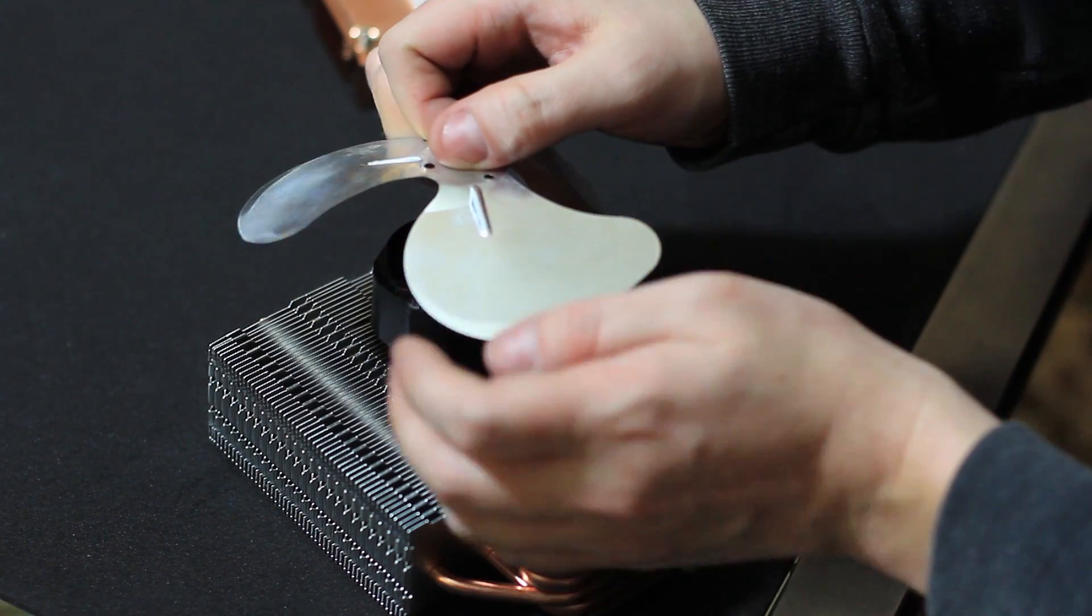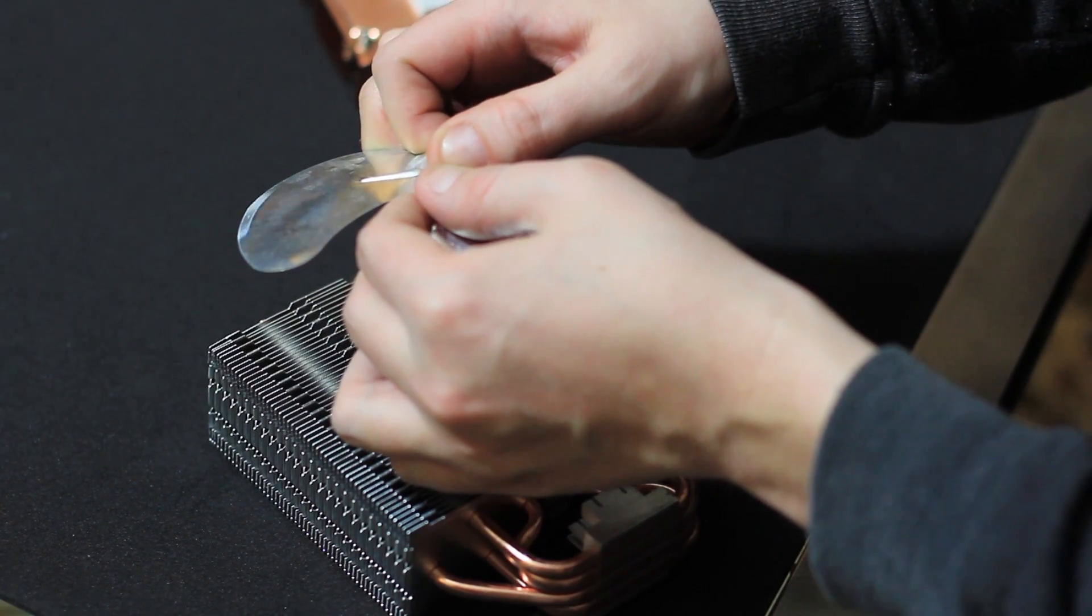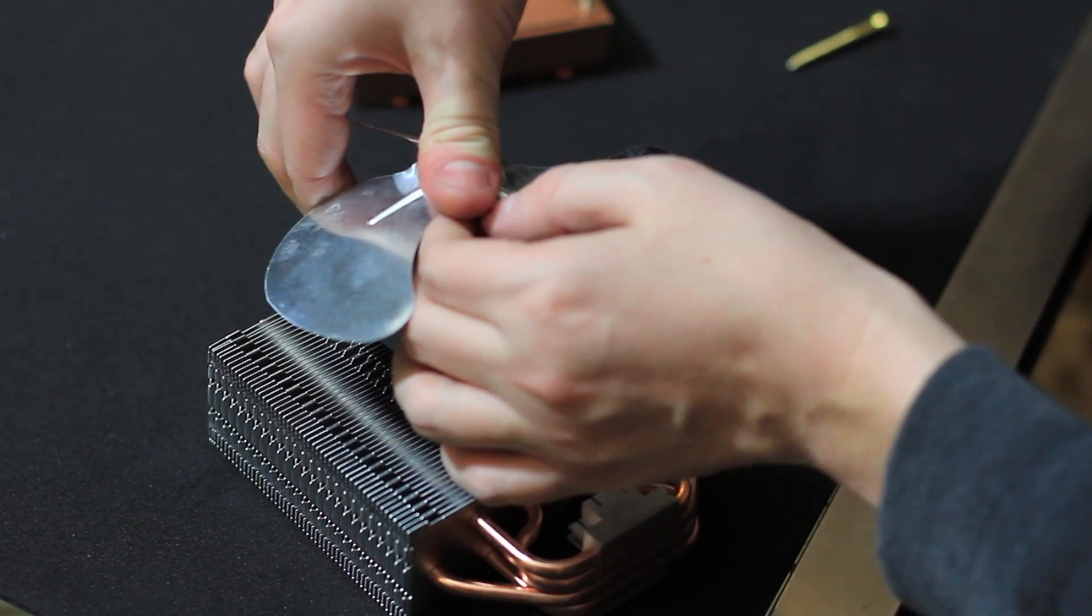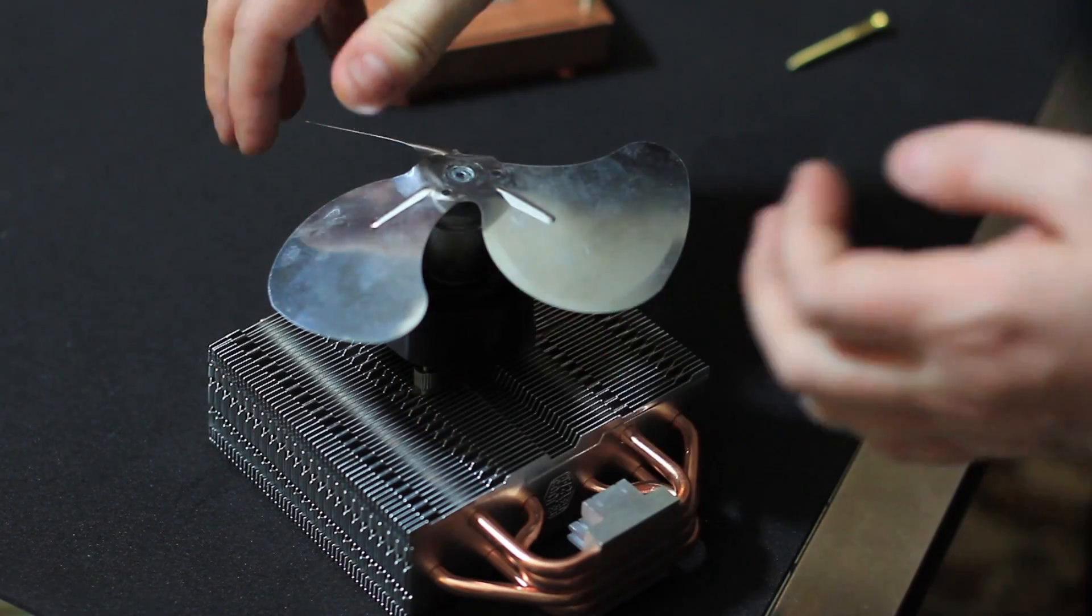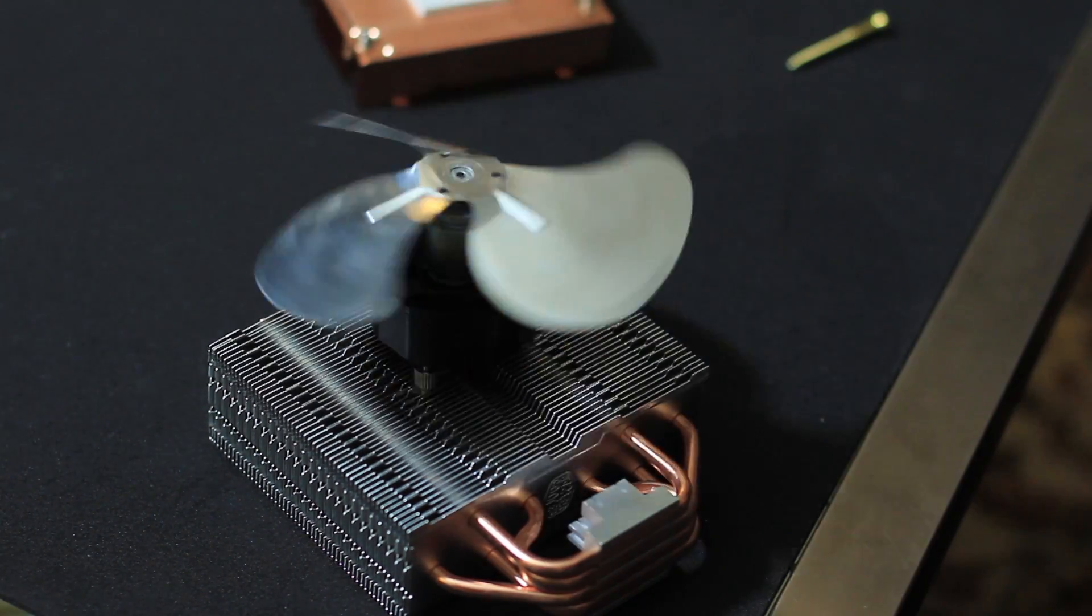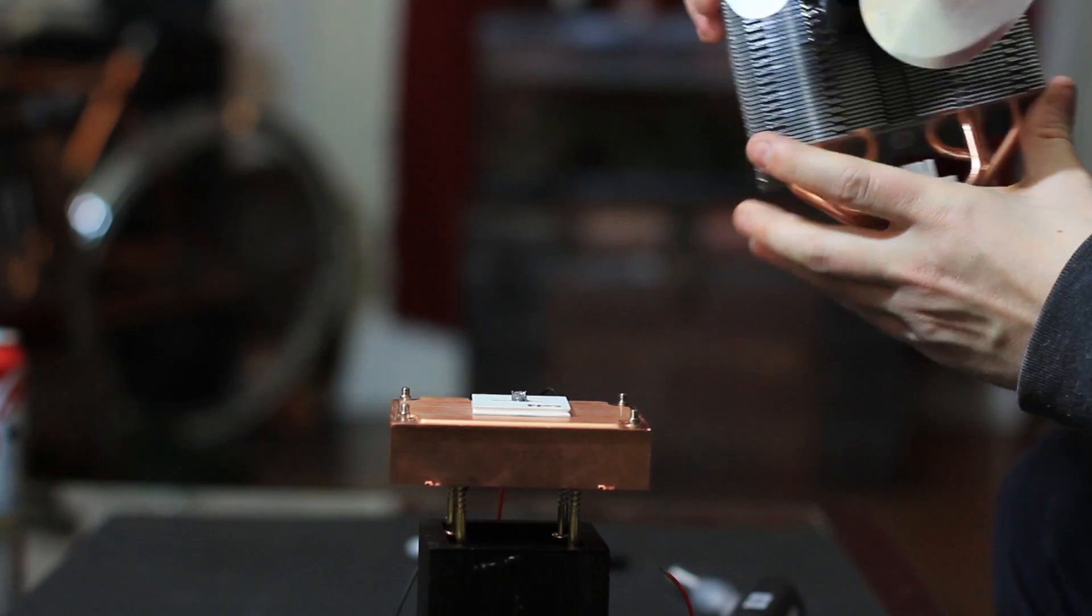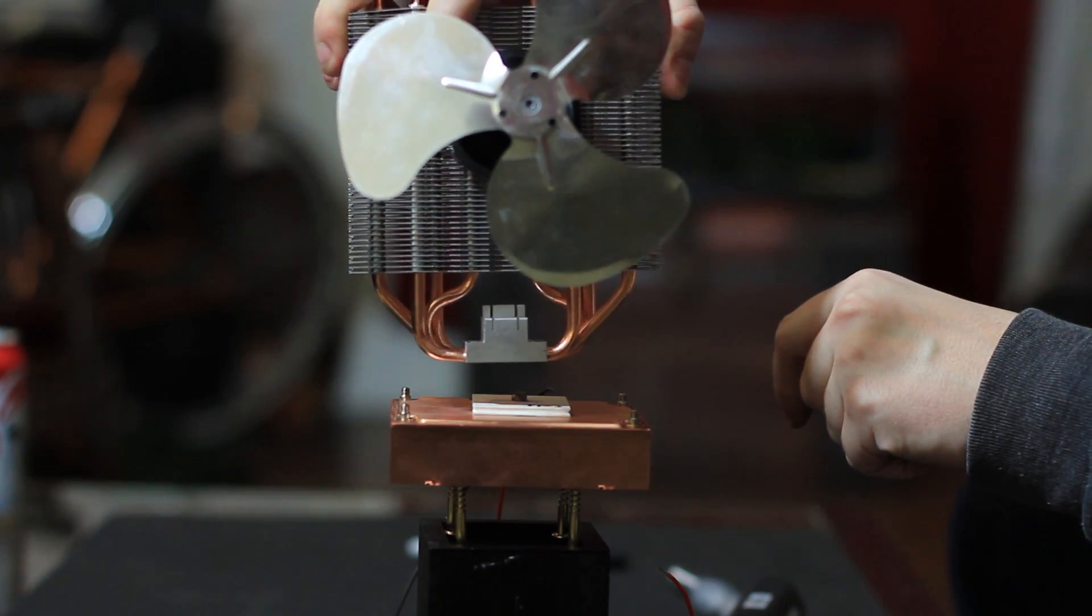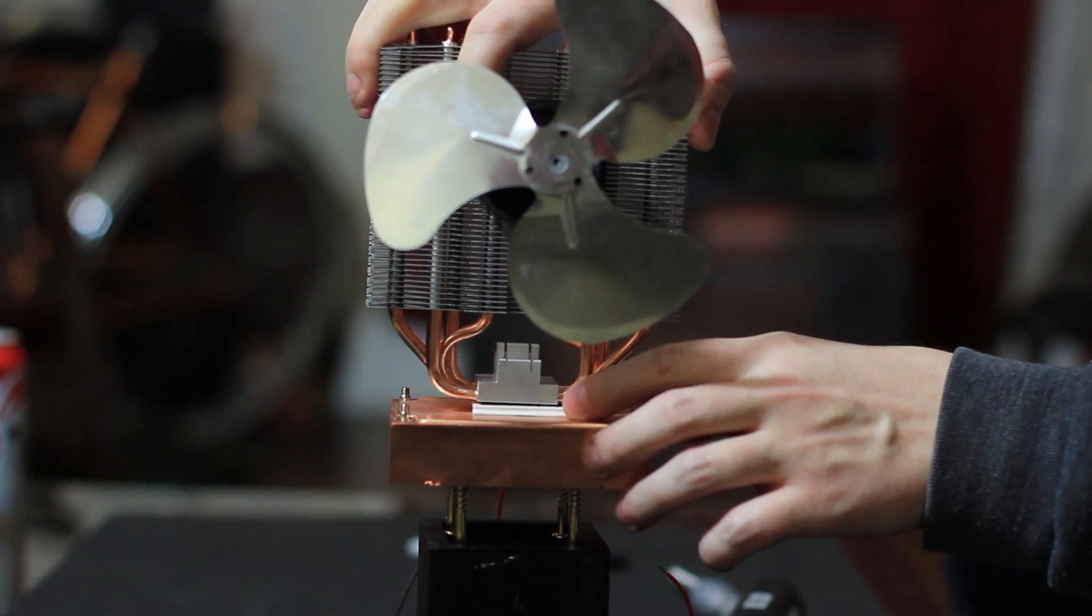The fan blade came from a broken USB fan that I had laying around. It should be perfect for this application, so I secured the motor and placed the fan blade onto it. It's a good fit. And now it's time to put this heat sink onto the Peltier cooler. Again, I applied some thermal paste and pressed it into position.